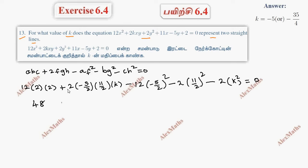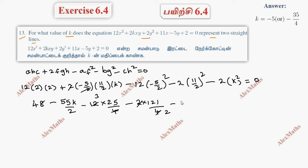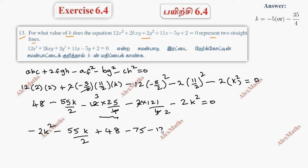Without further simplification: it is 48, cancelling the 2. Minus 55K by 2. Whole square, minus 12 into 25 by 4, this cancels plus 4. Adding 2 into 121 by 4, this cancels plus 2. Adding minus 2K squared equal to 0. Rearranging: plus 2K squared, plus 55K by 2, plus constant terms 48, minus 75, plus 25 into 3, minus 121 by 2, equal to 0.